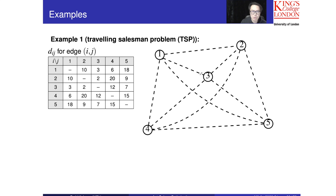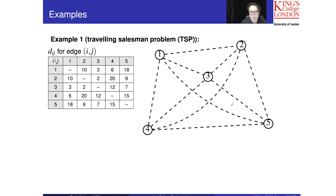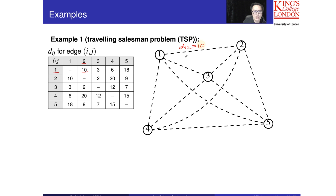Now I'll demonstrate with an example of five nodes. We need some information before we start: the number of cities is five. The dashed lines show a fully connected system — node one can go to every city, node two can go to every city, and so on. Associated with each edge is local information dij. For example, d₁₂ equals ten.